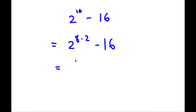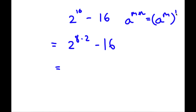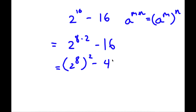Now 8 times 2 — if I have something in the form a to the power of m times n, this is equal to a to the power of m, to the power of n. So 2 to the power of 8 times 2 is going to equal 2 to the power of 8, to the power of 2. And minus 16 I can rewrite as 4 squared.